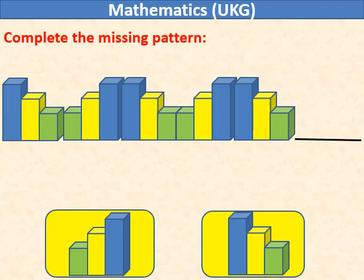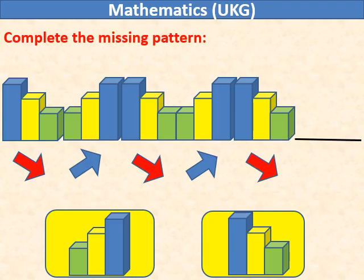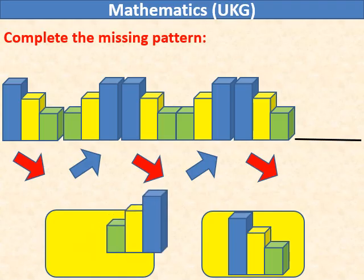First, three pillars are in decreasing order. Next, three pillars are in increasing order. If we follow the same pattern, then in the last group, we should have three pillars in increasing order.